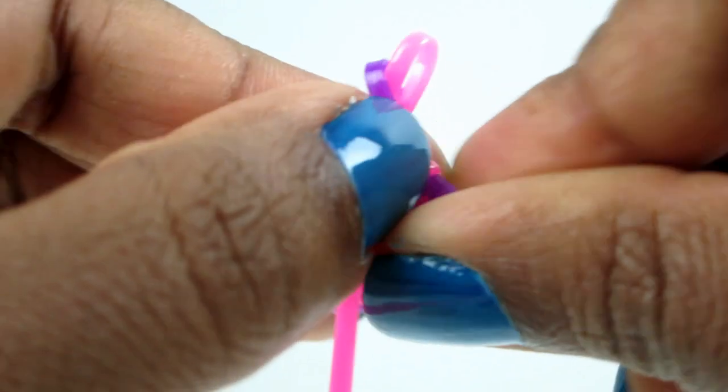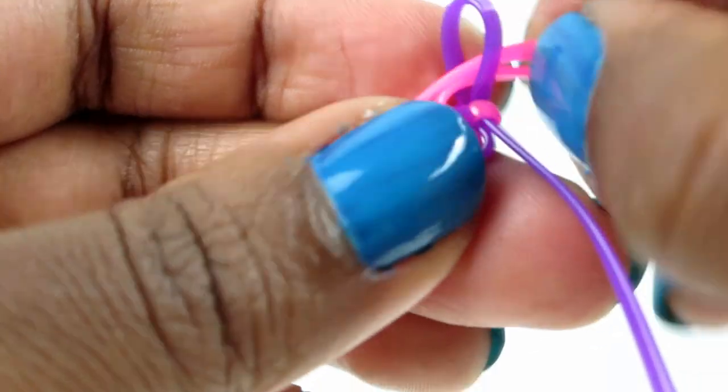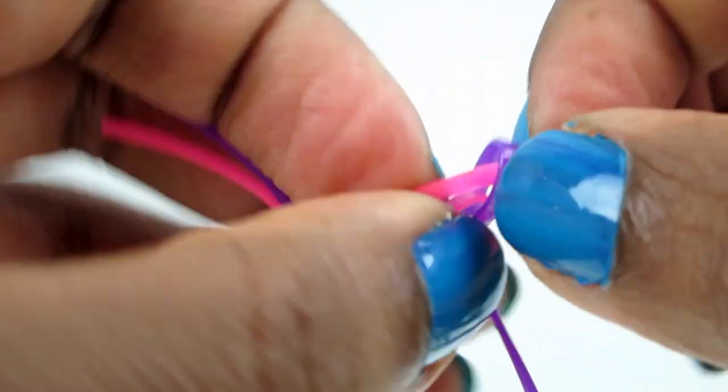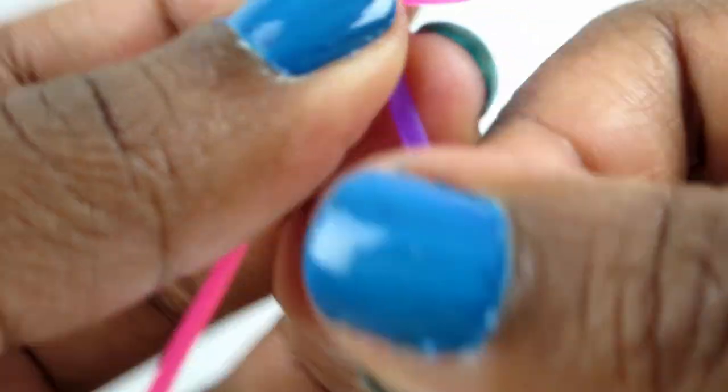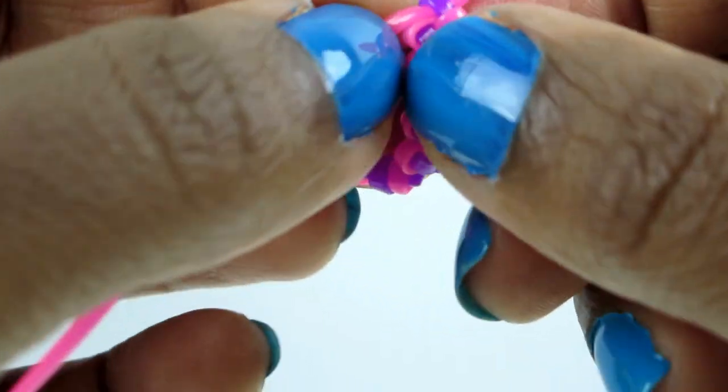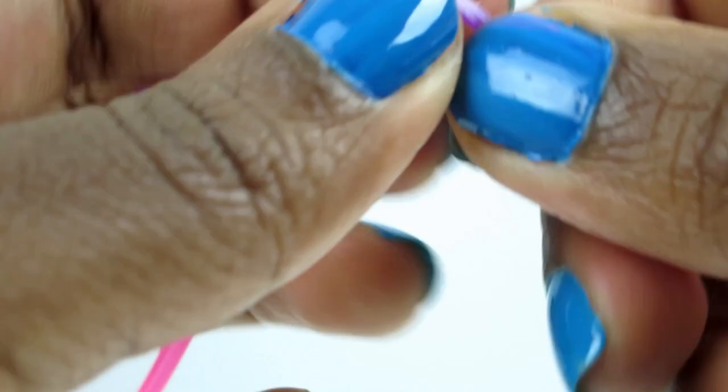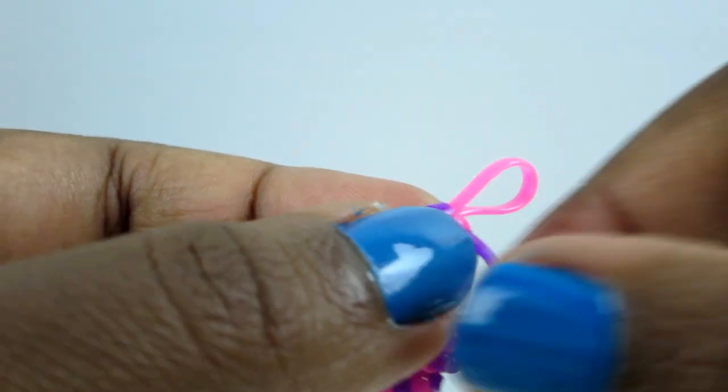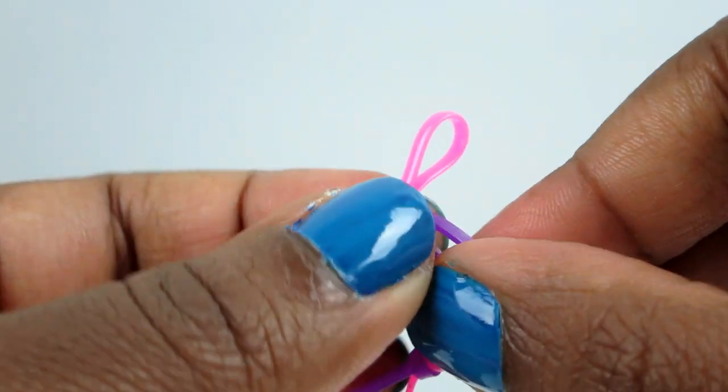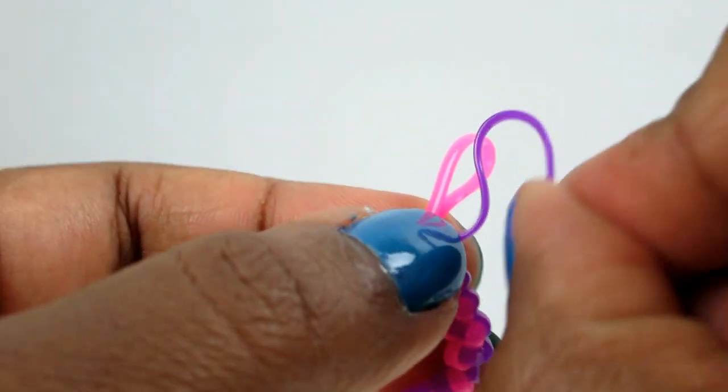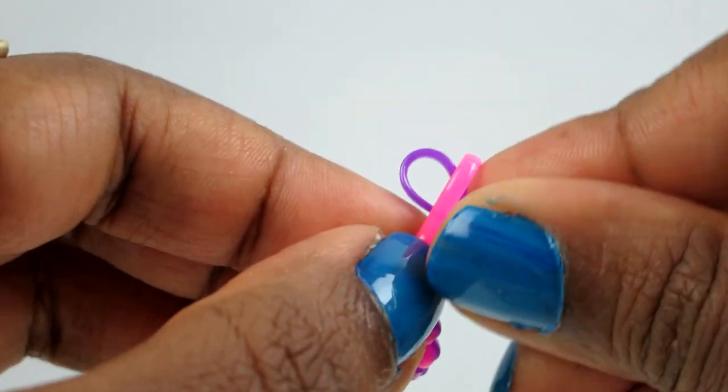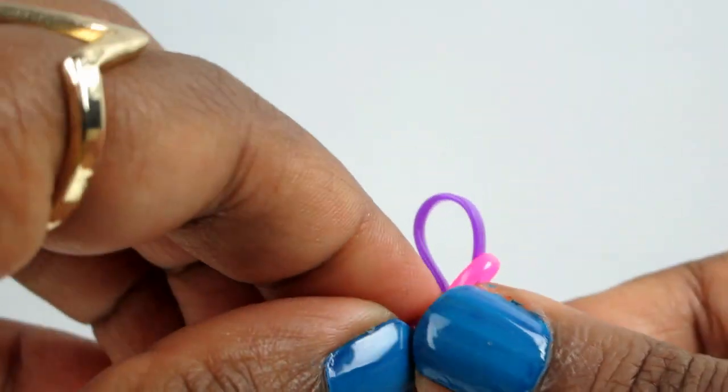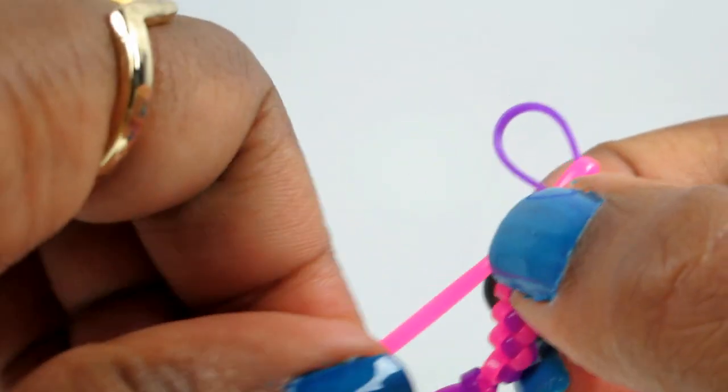and you pull down the gimp. So again, let's just explain it. Let's say here we're starting with the pink loop, pink loop's open. You make a loop with the purple. And since we started with the pink, we pull the pink string down.